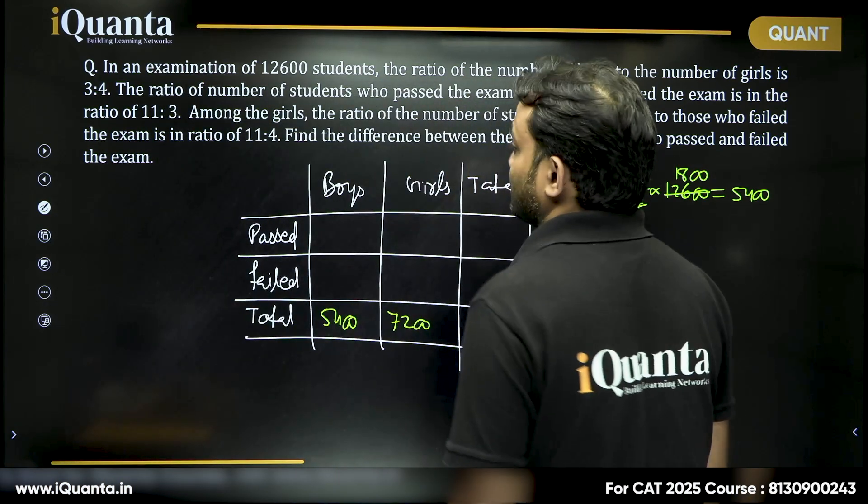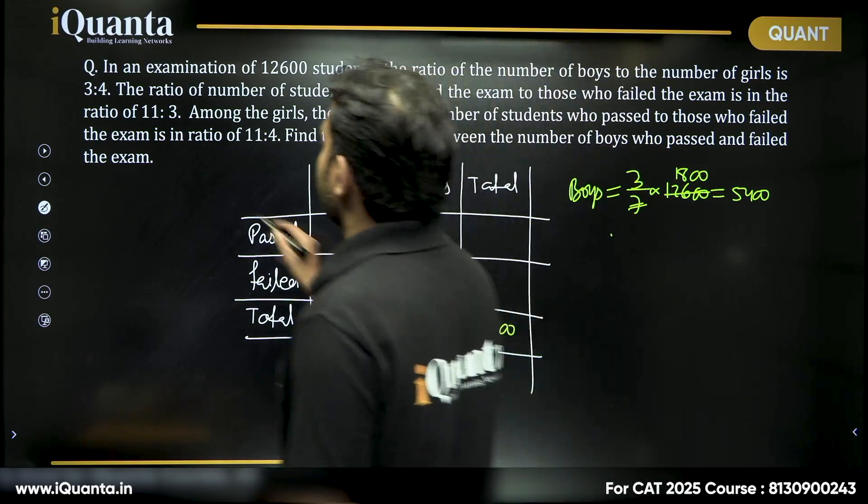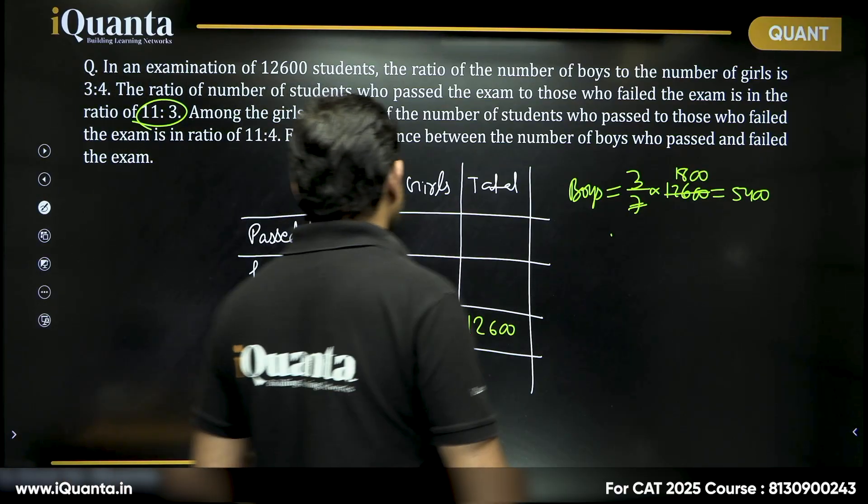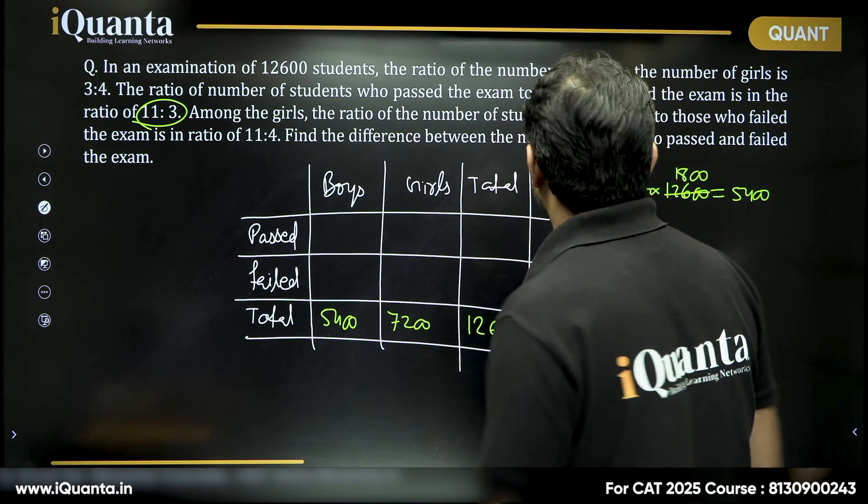Now it says that number of students who passed and who failed are in the ratio 11 is to 3. Again, this is 11y, this is 3y, total it will be 14y.